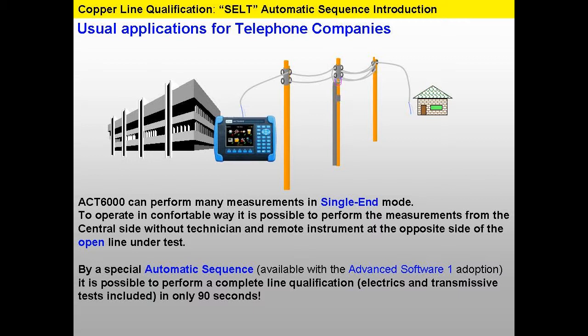By a special automatic sequence, available with the ADVANCE SOFT-1 adoption, it's possible to perform a complete line qualification — electrics and transmissive testing included — in only 90 seconds.